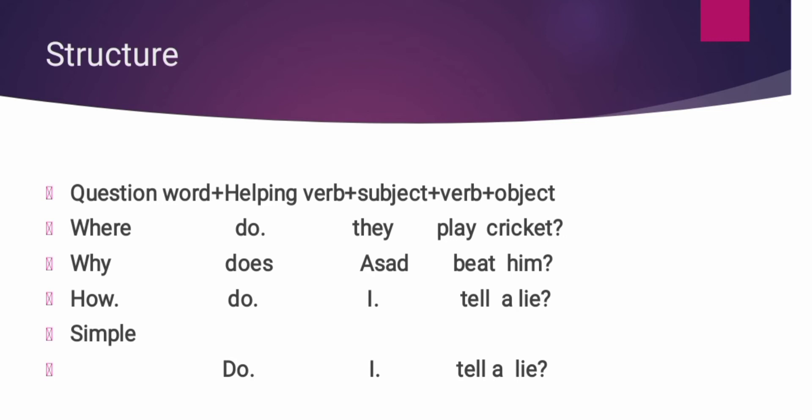Next example: How do I tell a lie? — मैं कैसे जूट बोलता हूँ. कैसे के लिए how word इस्तमाल होता है. I के साथ do helping verb इस्तमाल होती है. How question word, do helping verb, I subject, tell verb, lie object. Compare करें simple से: Do I tell a lie? — क्या मैं जूट बोलता हूँ. वो simple है, और ऊपर वाले double interrogative थे.